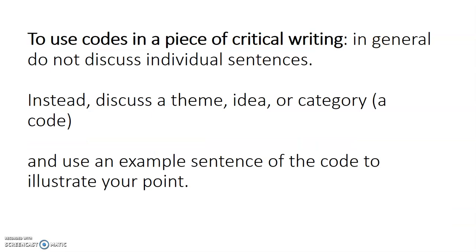Then, when you actually do your critical writing, to use critical codes in a piece of critical writing, in general do not discuss individual sentences. Instead, discuss a theme, idea or category. That means discuss a specific code and then use example sentences of the code to illustrate your point.